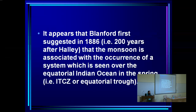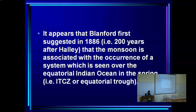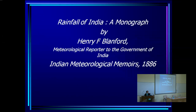We are saying the monsoon is a manifestation of the seasonal migration of the ITCZ in response to seasonal variation of solar radiation. I was very much intrigued to find that Blanford first suggested this in 1886 — that the monsoon is associated with the occurrence of a system seen over the equatorial Indian Ocean in the spring. He was way before Riehl, Charney, or anybody. He didn't know about the ITCZ or equatorial trough, but he described the same system.